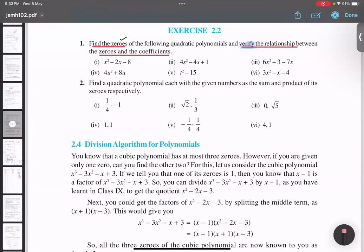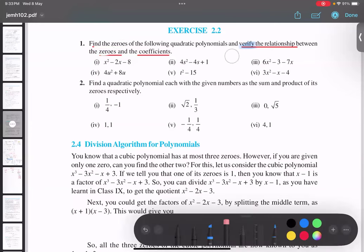So, when we are focusing on the second question, let me just finish this. Okay. The question is asking us to find a quadratic polynomial in which the sum and product of the zeros are given respectively. The word respectively is very important. That means the first thing which is given is sum.